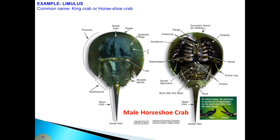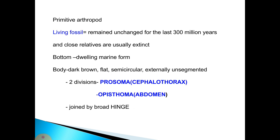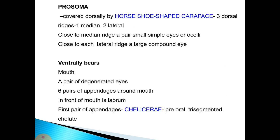An example is Limulus, the king crab or horseshoe crab. It is a primitive arthropod and a living fossil, remaining essentially unchanged for the last 300 million years; its close relatives are usually extinct. It is a bottom-dwelling marine form. The body is dark brown, flat, semicircular, and externally unsegmented, divided into two divisions: prosoma or cephalothorax, and opisthosoma or abdomen. These two segments are joined by a broad hinge. The prosoma is covered dorsally by a horseshoe-shaped carapace — hence the name horseshoe crab — with three dorsal ridges: one median and two lateral.